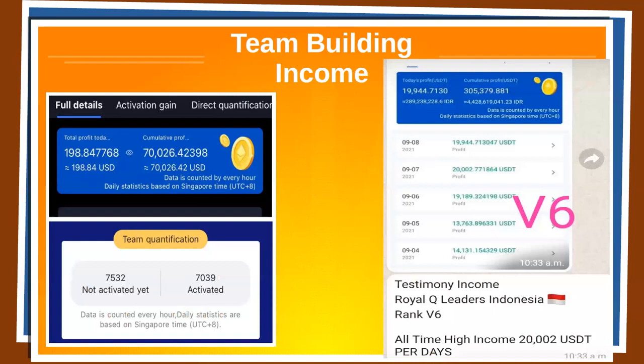Here are the estimated income ranges by rank: V2 is 50 to 100 dollars, V3 is 100 to 200, V4 is 500 to 1,000, V5 is 1,500 to 2,000, and V6 is 5,000 to 10,000 dollars. I'm not sharing these to impress you — I'm sharing them to impress upon you what is possible. The picture on the left was achieved in about six months by someone who shared this concept with a lot of people and taught them to do the same.